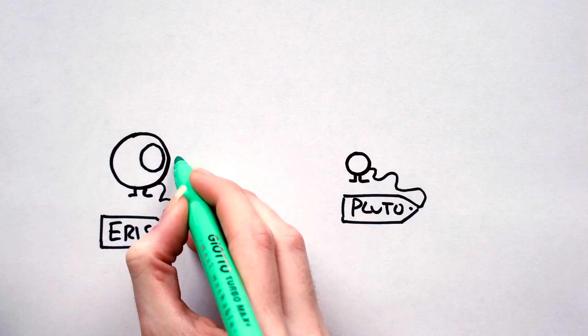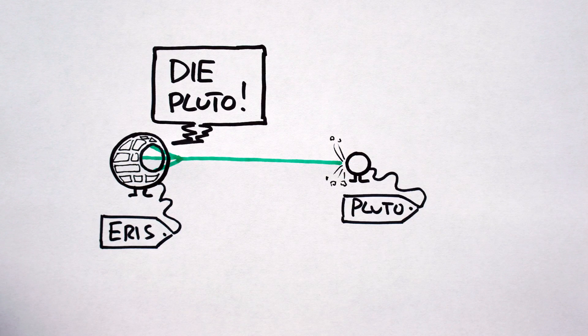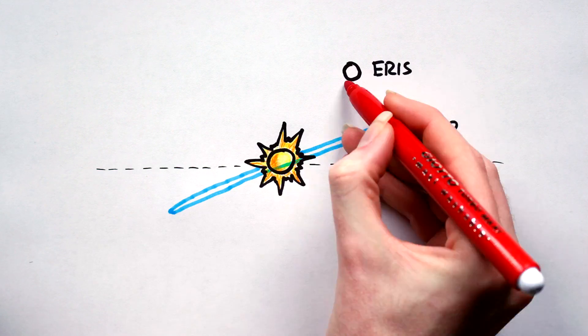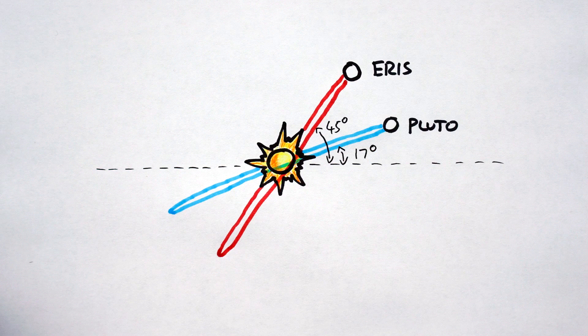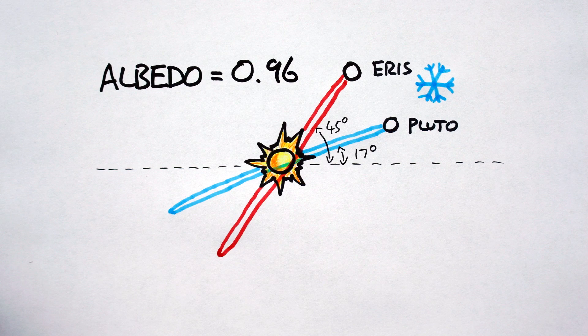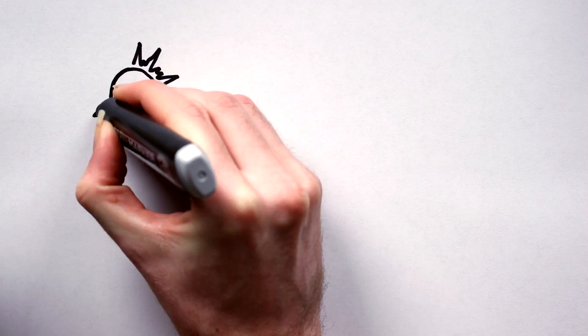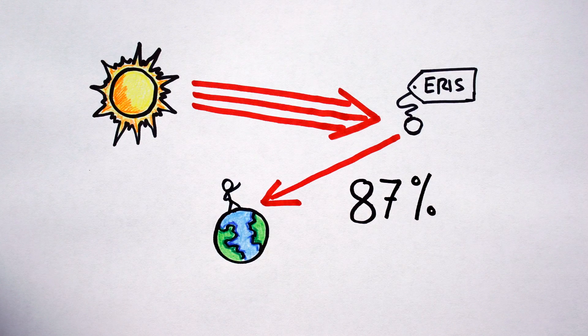Now, aside from having a badass naming convention, and going all Death Star on Pluto, Eris is a very interesting object, which, ironically, has a lot in common with its victim. Like Pluto, its orbit is very elliptical and inclined. It possesses a seasonal atmosphere. But, interestingly, Eris is one of the most reflective objects in our solar system, second only to Saturn's moon Enceladus, reflecting 87% of the light that hits it.